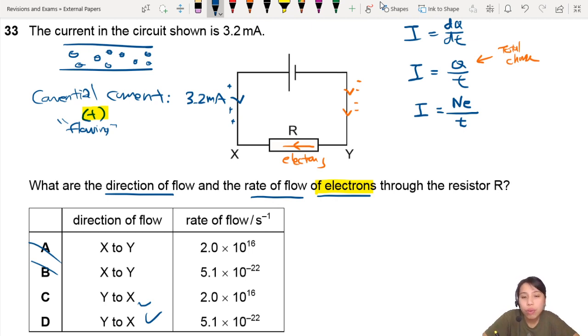So if you're looking for rate of flow of electrons, the hint is this, per second. So number per second equals to I over E. So number over T will be the current, 3.2 times 10 to the negative 3, divide by time.